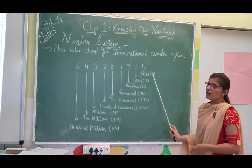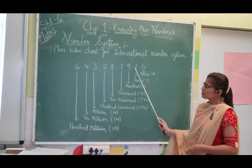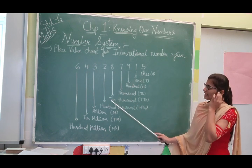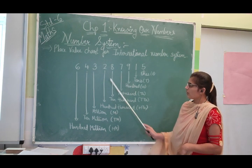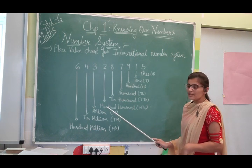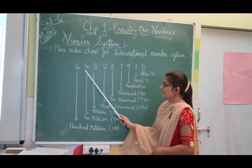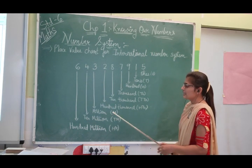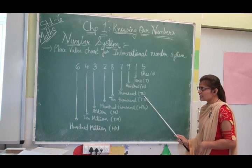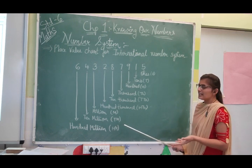Now, 5 is on the 1st place, 1 is on the 10th place, 9 is on the 100th place, 7 is on the 1,000th place, 8 is on the 10,000th place, 2 is on the 100,000th place, 3 is on the million's place, 4 is on the 10 million's place, and 6 is on the 100 million's place. So from 1 up to 100,000 the places go: 1, 10, 100, 1000, 10,000, 100,000 — then million, 10 million, 100 million.